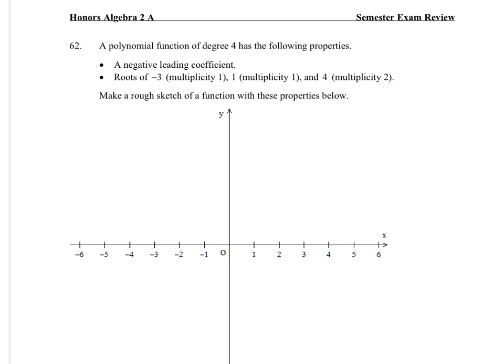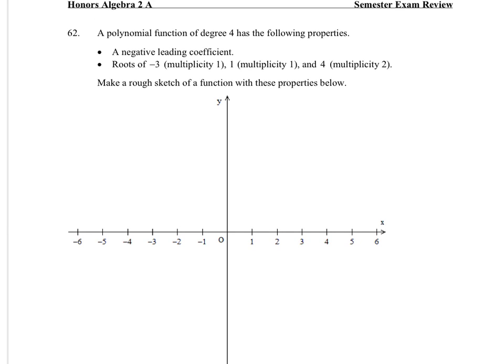Last but not least, the last question on your exam review. We have a degree of 4 with a negative leading coefficient, so that means my end behaviors both go down. The roots are -3, 1, and 4. So I have to go through -3, through 1, and back down. And there's a rough sketch of my graph.